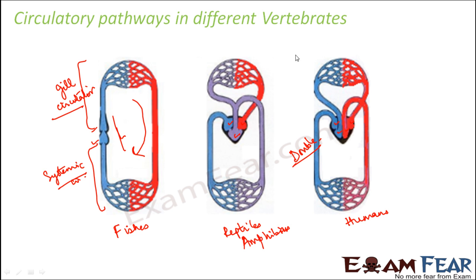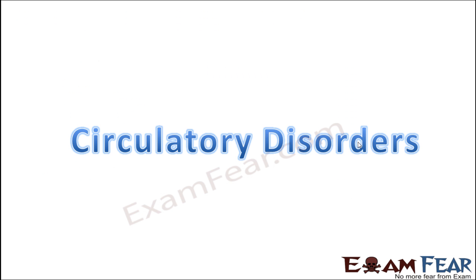In amphibians and human beings, we have double circulation, with one specific pulmonary circulation and another systemic circulation. By looking at this figure, you can point out the differences between the circulatory systems of fishes, reptiles, and human beings. With this we end our discussion on the circulatory system. Now let us look at some of the disorders which can happen due to malfunction of the circulatory system.